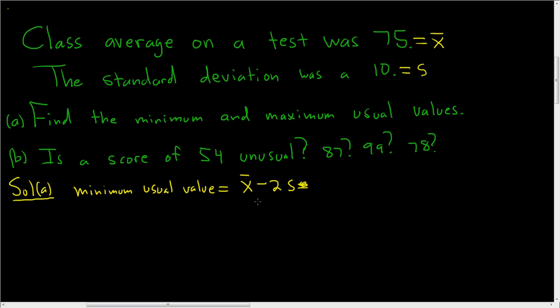So in this case, x-bar is 75, and our s, that's our standard deviation, that was 10, so 2 times 10. So 75 minus 20 equals 55. That is the minimum usual value.